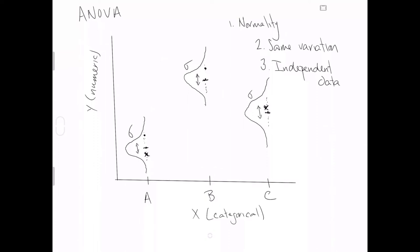So those are our three assumptions that define ideal data. For whatever observations we have in each level, we want the observations to be approximately normal, we want them to have roughly the same standard deviation, and we don't want any of our data to be inherently related to each other. We just want these to be completely randomly sampled data.